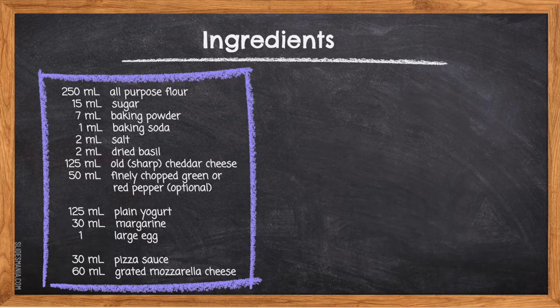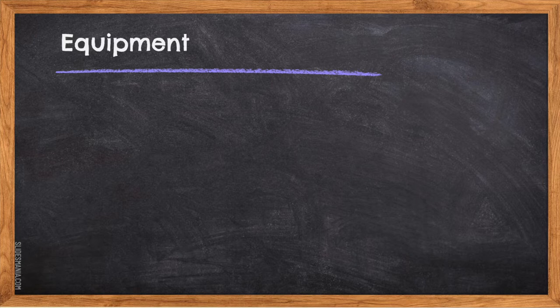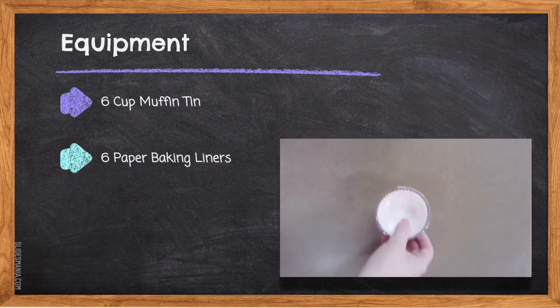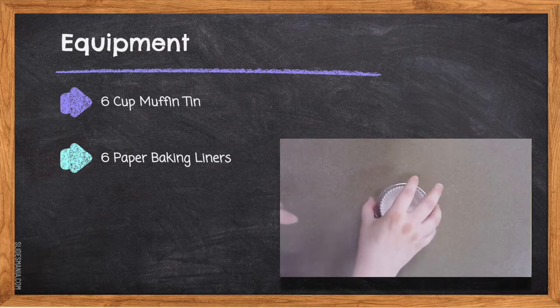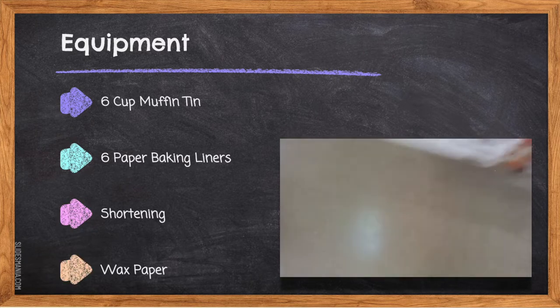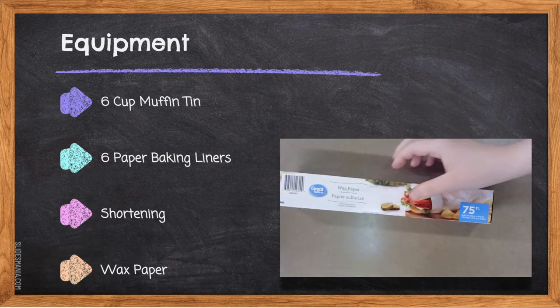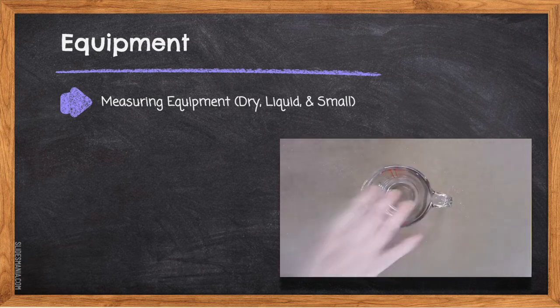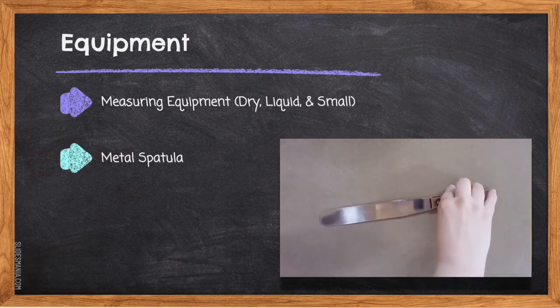These are all the ingredients you need to make the pizza muffins. Equipment for this recipe you will need: a six-cup muffin tin, six paper baking liners, shortening for greasing the muffin tin, wax paper also for greasing the muffin tin, and measuring equipment including dry measures, a liquid measure, and small measures.